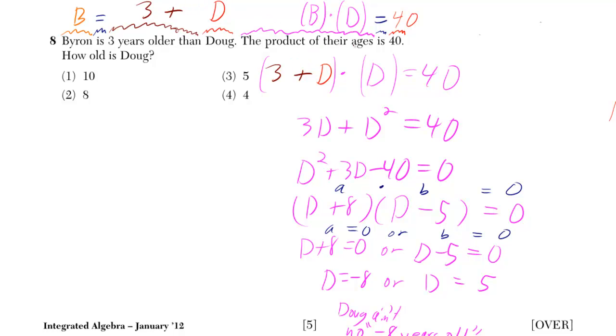The product of their ages is B times D, is equal to 40. How old is Doug? It's the same thing as asking, what is D?